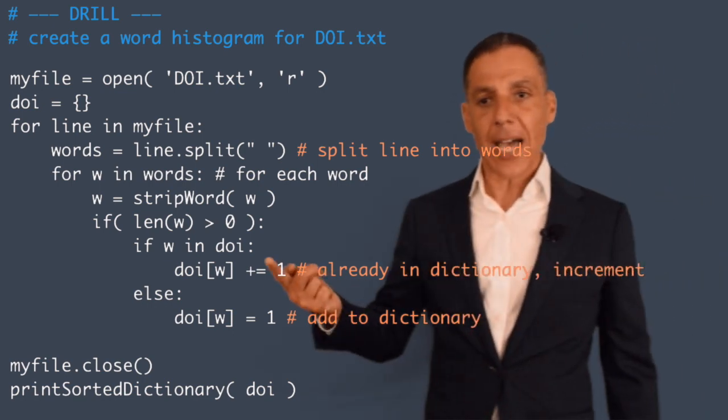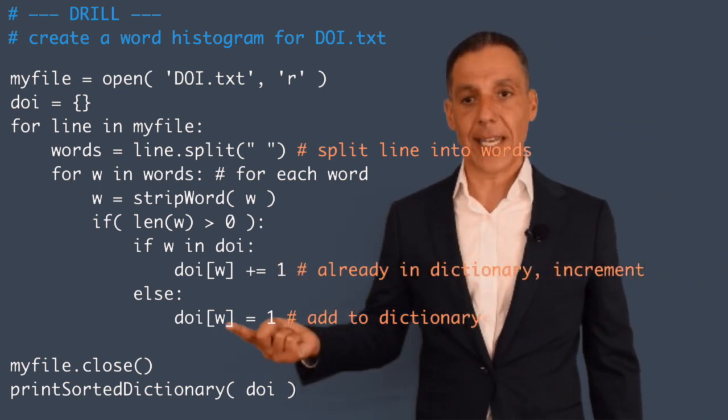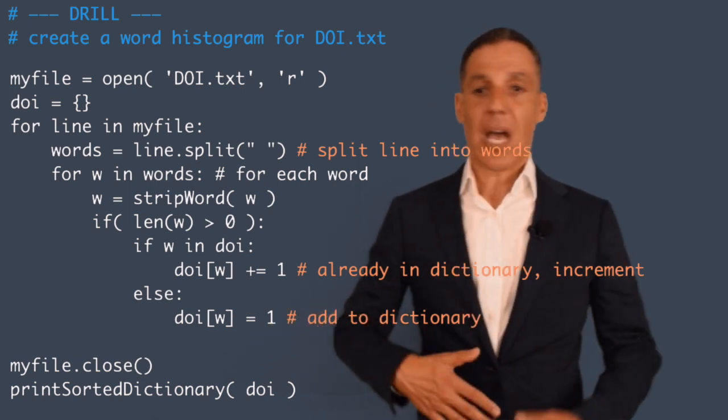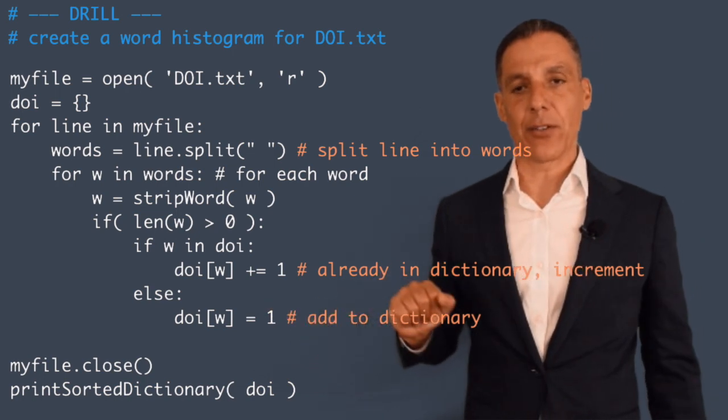And if it's not, well I'm going to shove it into the dictionary by setting DOI of W to be one. So here I haven't seen it before: add it to the dictionary and set the value to one.